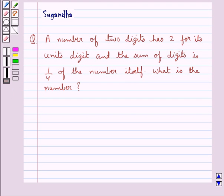Hello and welcome to the session. In this session we discuss the following question which says a number of two digits has 2 for its units digit and the sum of the digits is 1 upon 4 of the number itself. What is the number?